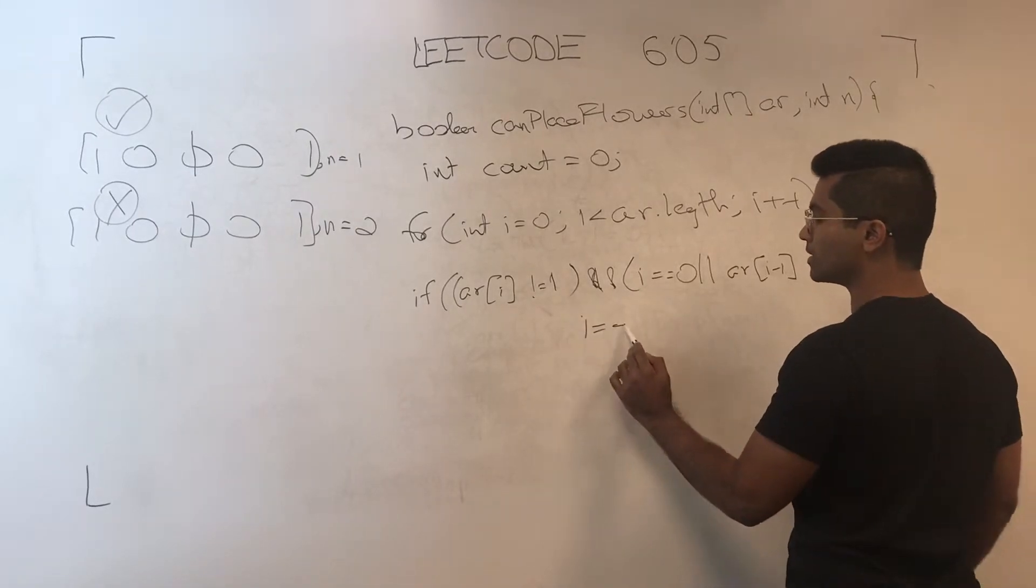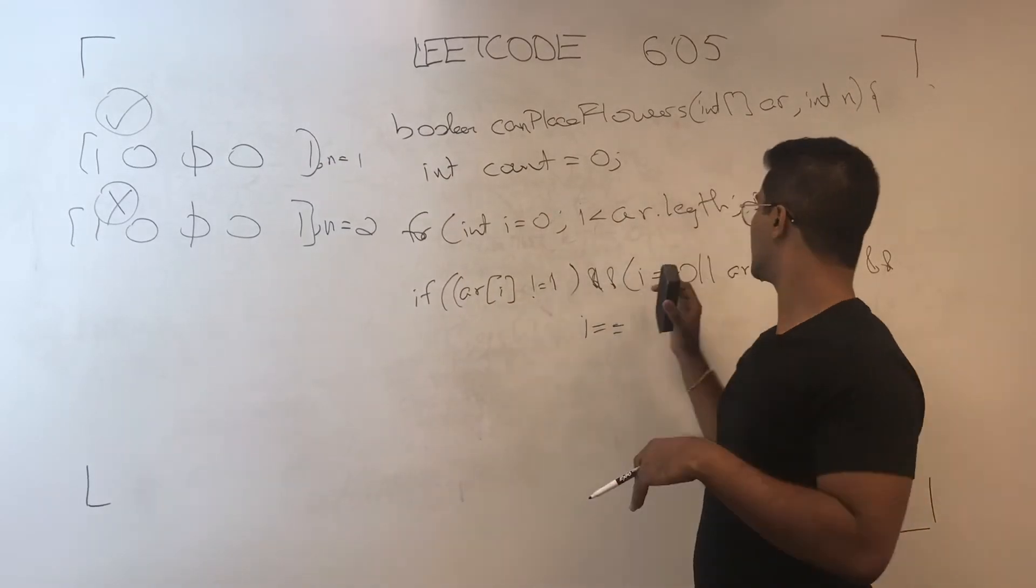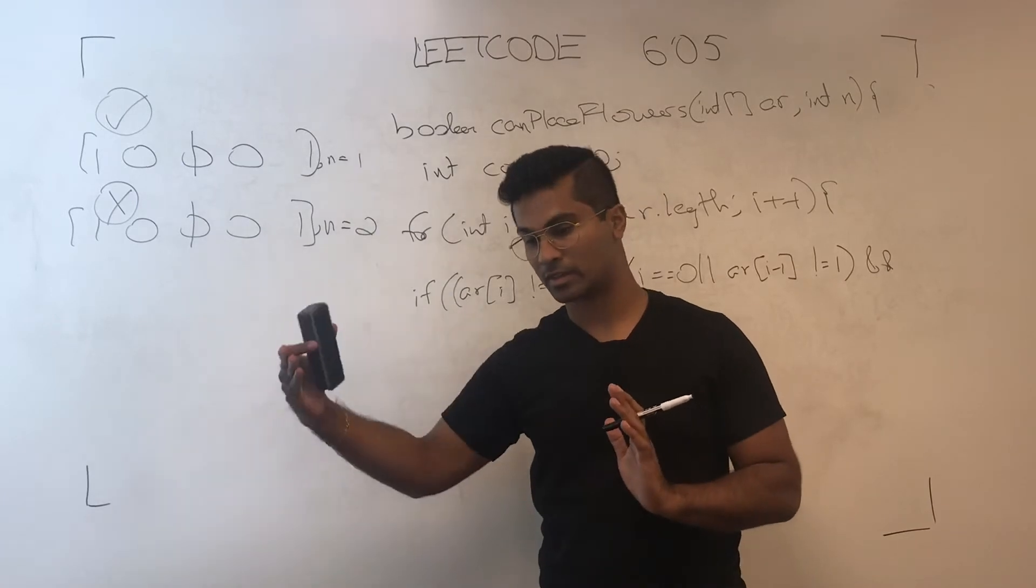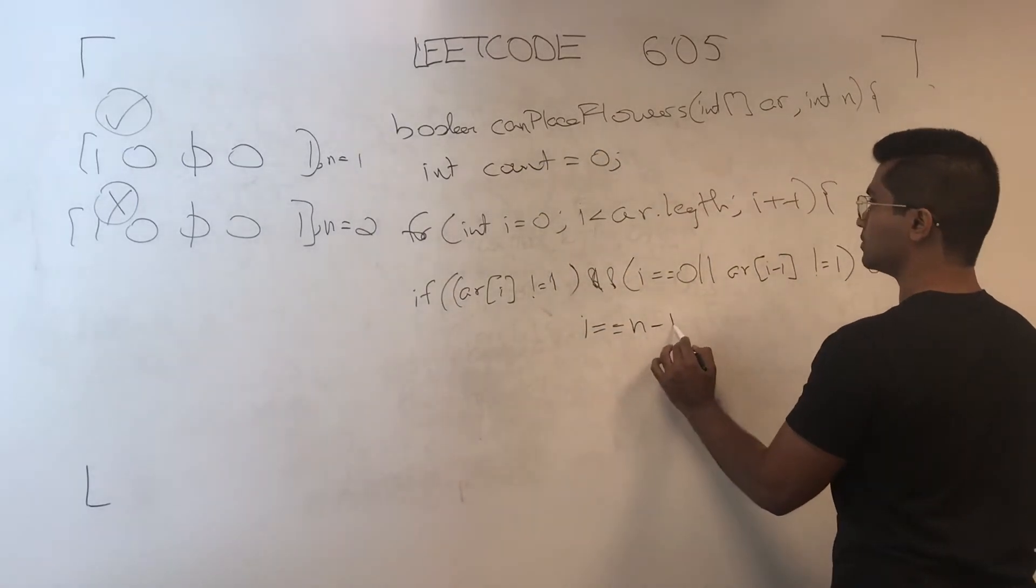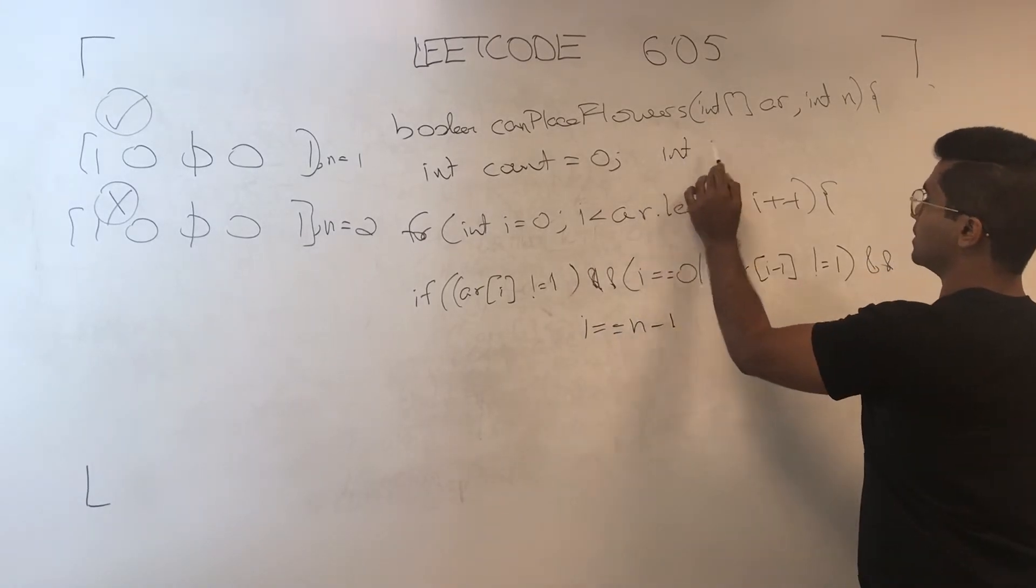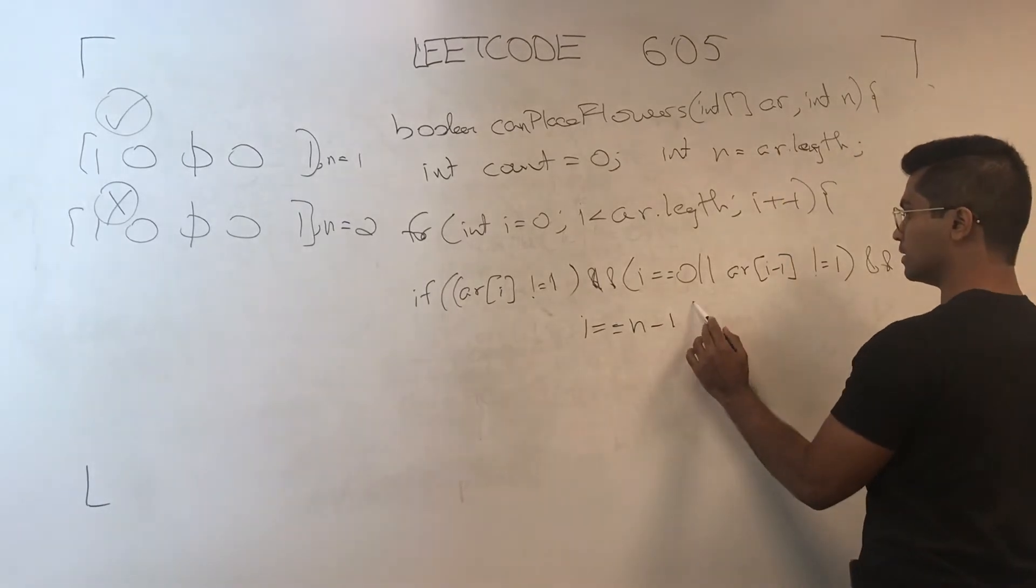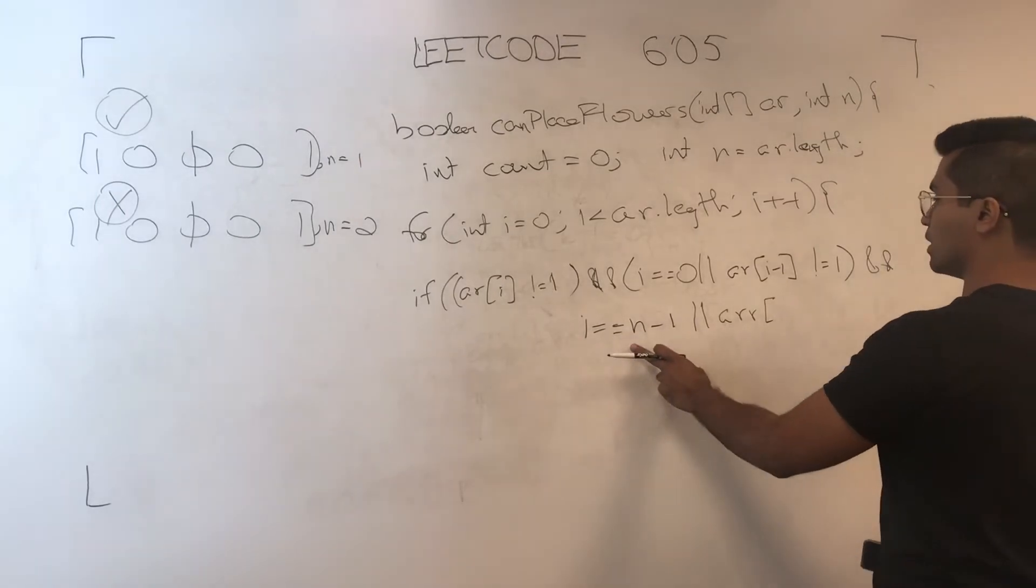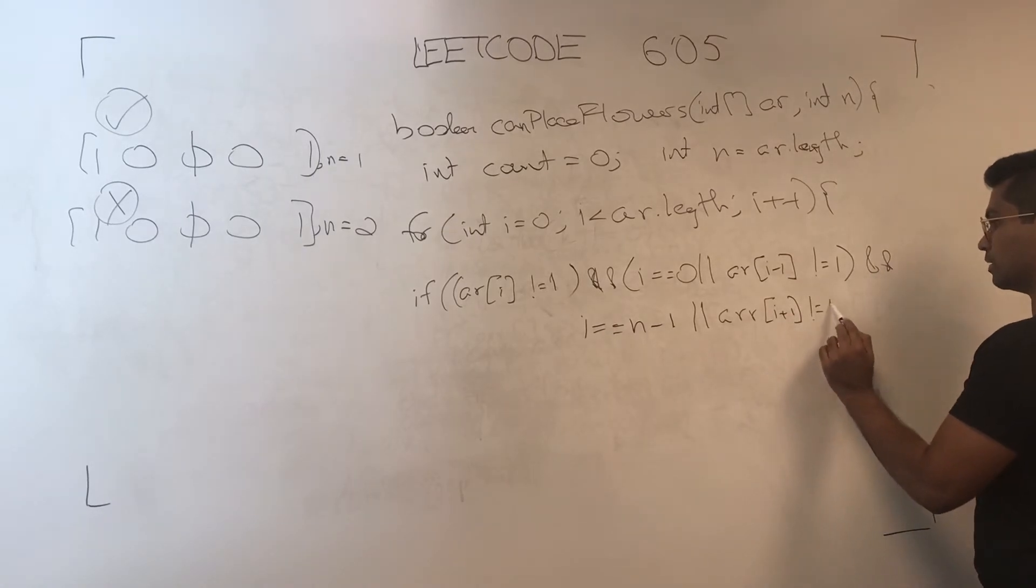And same thing, but on the flip side, are we at the edge? Or is there a space next spot over i plus one, where n would be, int n is equal to ar dot length. Or, ar of i plus one is not equal to one.